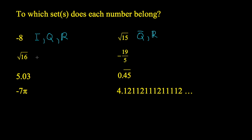Square root of 16. Well, you might be tempted to call that irrational, but if you think about it, the square root of 16 is, in fact, 4. And 4 is a natural number. It's an integer. It's a rational number, and it's a real number.